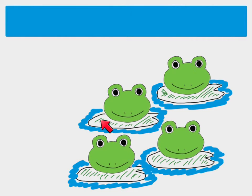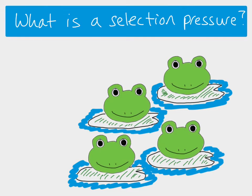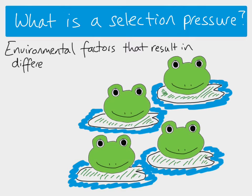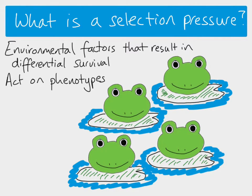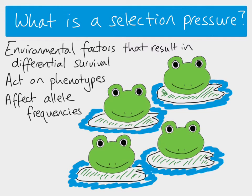Here we've got our frogs and their environment consists of lily pads, which they need, and they're in some sort of pool of water. A selection pressure is basically any environmental factor that can affect whether or not individuals survive. This idea of differential survival is where some individuals survive because they have characteristics which are more advantageous in that environment. Selection pressure acts on the phenotypes, but because phenotypes are caused as a result of the genotypes, a selection pressure is going to affect the allele frequency in the population. Importantly, a selection pressure can only result in differential survival if you have variation in the phenotypes.